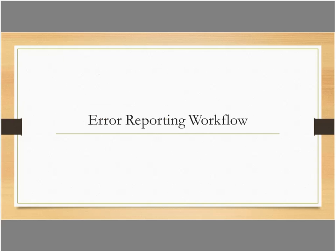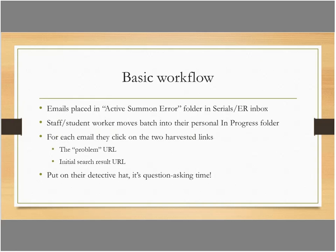Our error reporting workflow works as follows: emails are placed in an active Summon error folder within the serials and ER inbox. Whenever staff or students have time, they go into the active folder, pick a batch of about five to ten emails, and move them to their own personal in-progress folder—to make sure we don't have multiple people working on the same problem simultaneously. Then once they select an email to work on, they open it, click on the problem URL and the initial search result URL to have both open in the browser, and put on their detective hat.